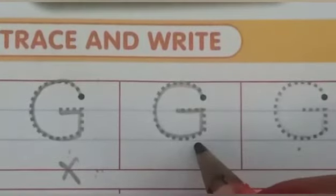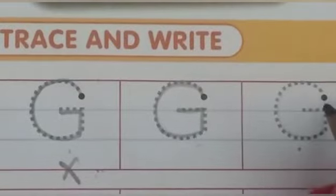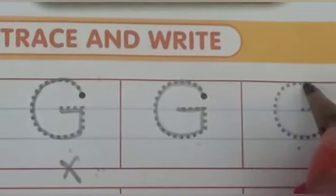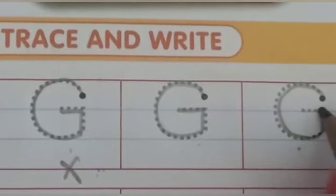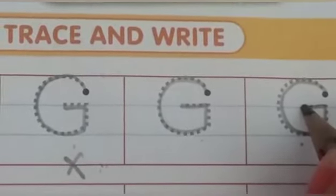Yes, try again. Make a curve, go to center line, and make slipping line. This is letter G.